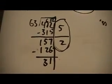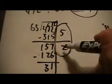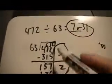Okay, and that is the Big Seven. Again, it's using what we know about multiplication to solve a division problem.